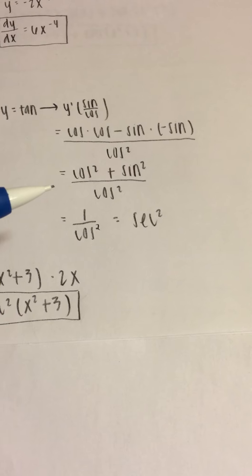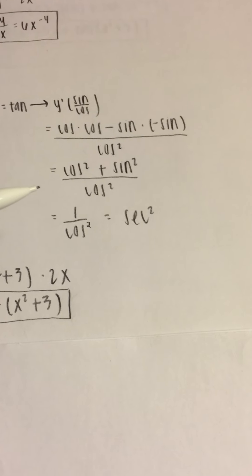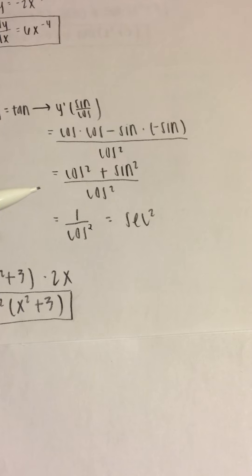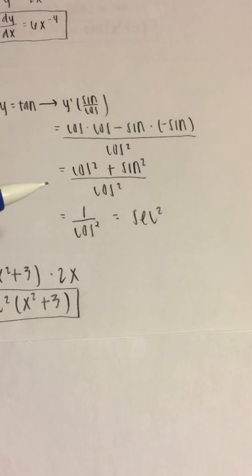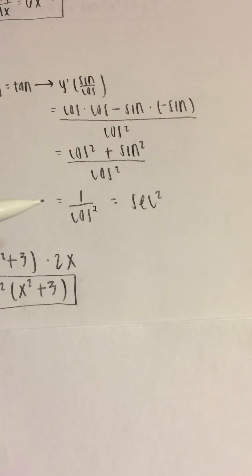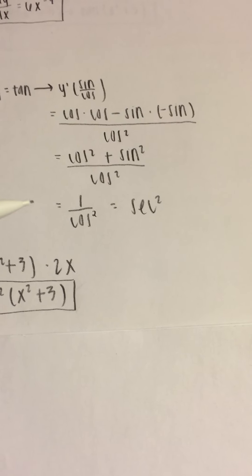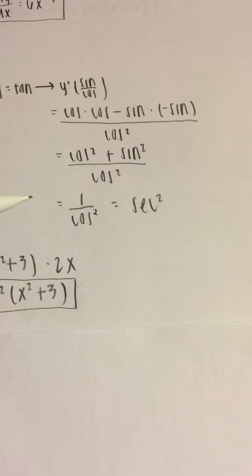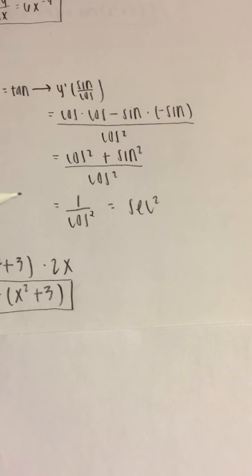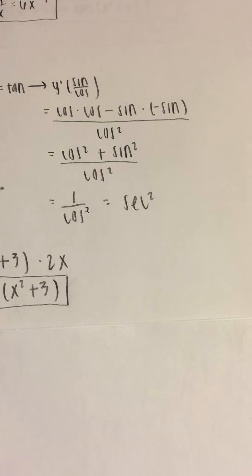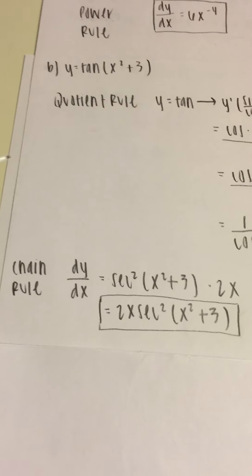Combining terms, we get cosine squared plus sine squared over cosine squared. By the trig identity, cosine squared plus sine squared equals 1, so we get 1 over cosine squared. Using trig identities again, 1 over cosine squared is secant squared. So the derivative of tangent is secant squared.